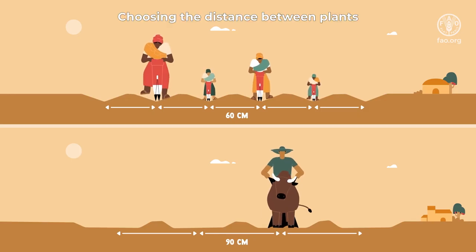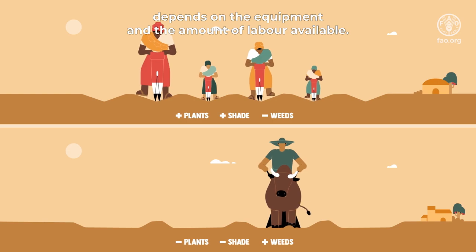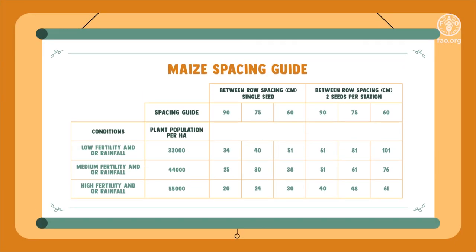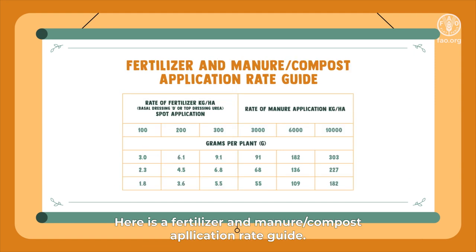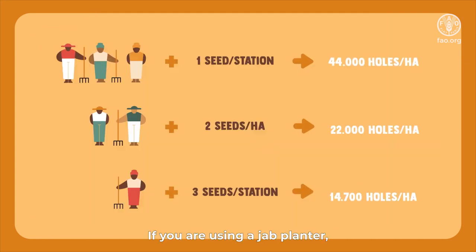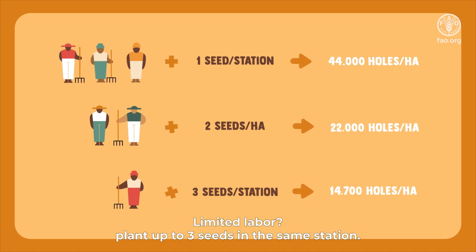Choosing the distance between plants depends on the equipment and the amount of labor available. Here is a maize spacing guide. Here is a fertilizer and manure compost application rate guide. If you are using a jab planter, plant one seed per station for optimum yield. With limited labor, plant up to three seeds in the same station.